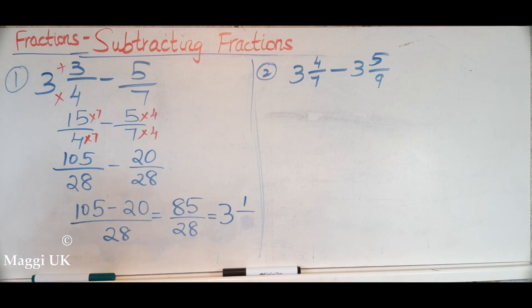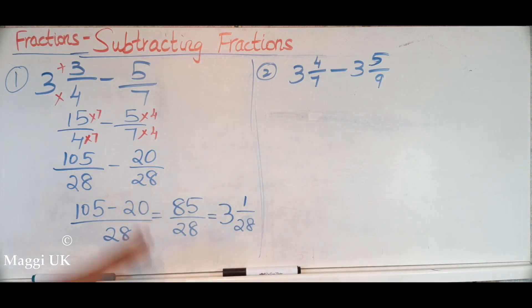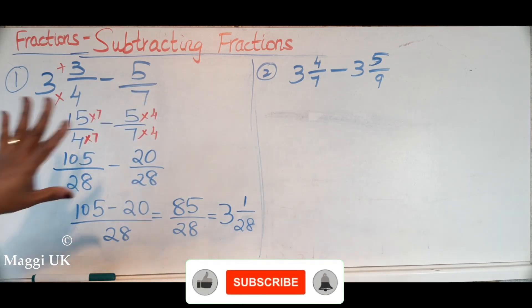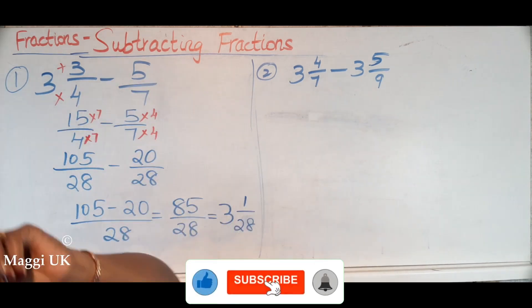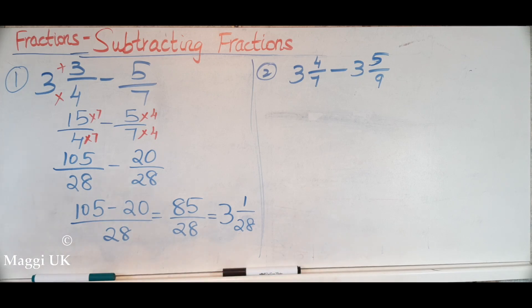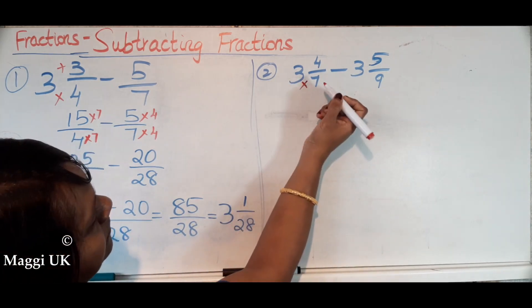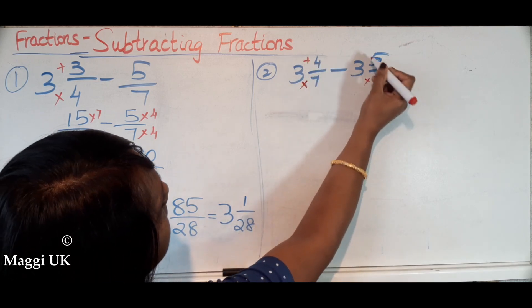Now I'm going to move on to this question. If you see here, we have one of the fractions as a normal fraction, but here we have both numbers as mixed numbers. So now can we convert this first? First you have to do times and then add. Times and add.